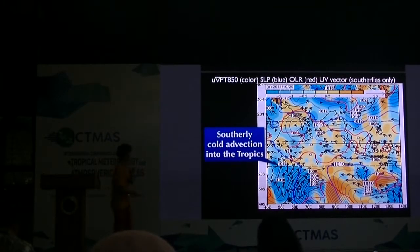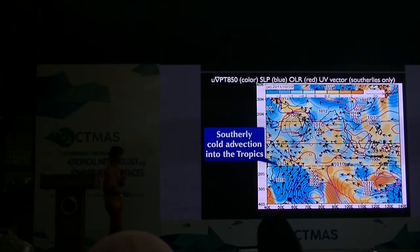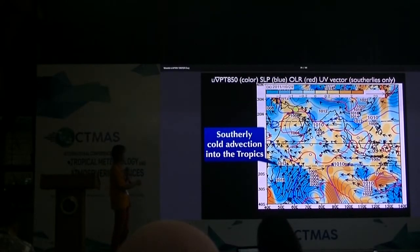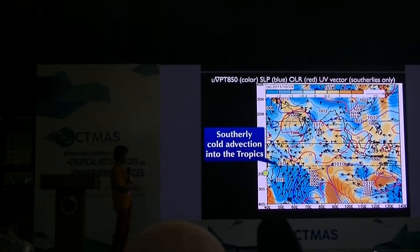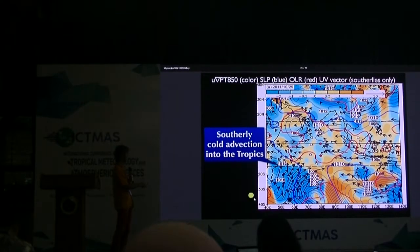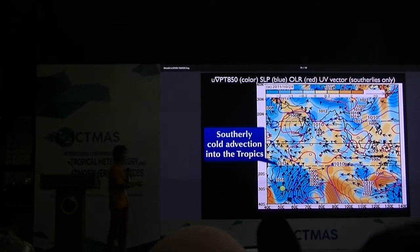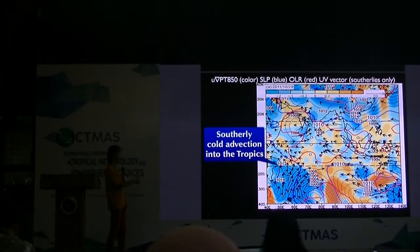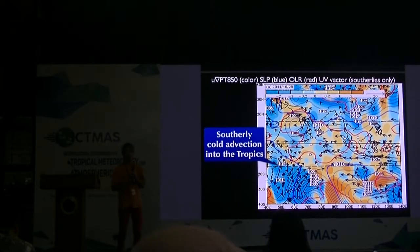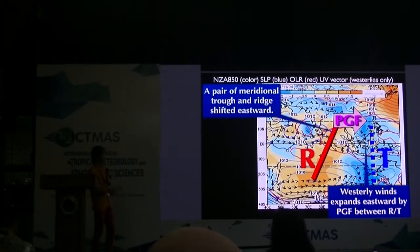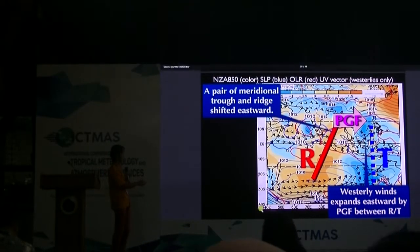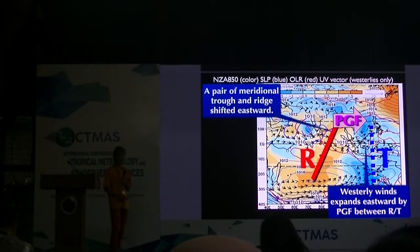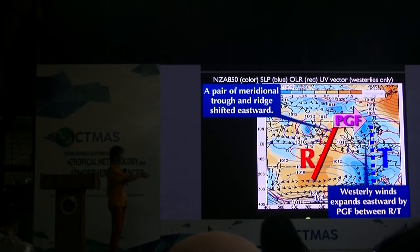In other words, please look at this: the cold air advection is shown by colder colors and southerly vectors. The colder advection enters into the system and makes a higher geopotential height anomaly. So, six days after, the pair of ridge and trough shifts eastward by pressure gradient force, entirely with coupling in the subtropics and the tropics.